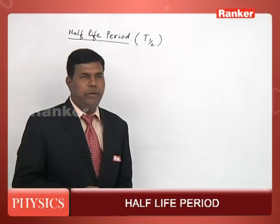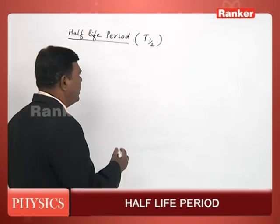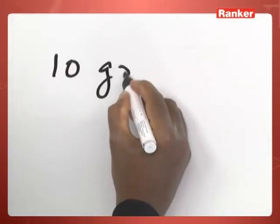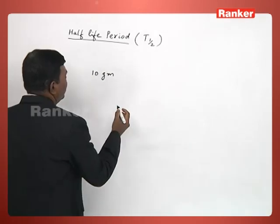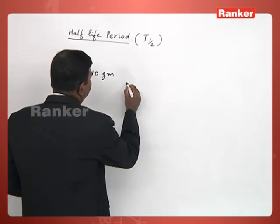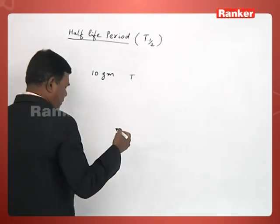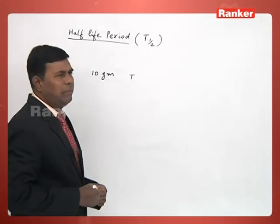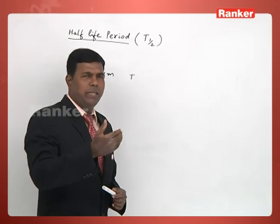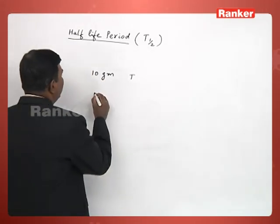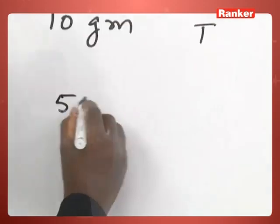That is, let us say we have a radioactive sample, radioactive material, which is initially 10 grams. After some time, let us say after time T, this radioactive material spontaneously emits alpha, beta and gamma rays. Therefore, its mass gradually decreases and after some time, let us say it becomes 5 grams.